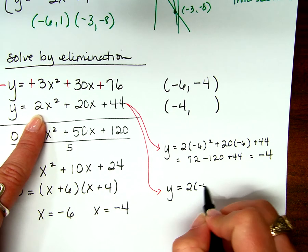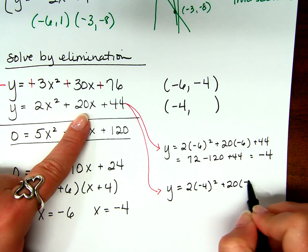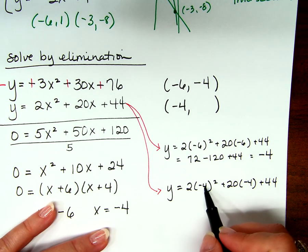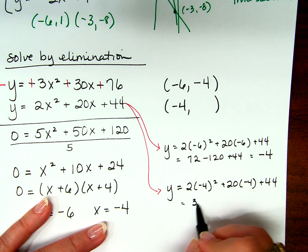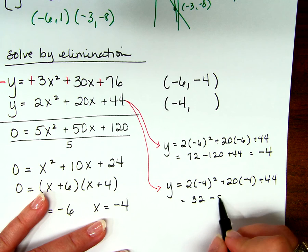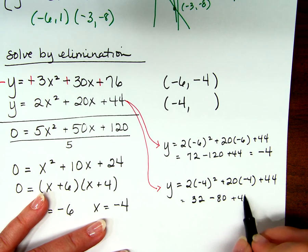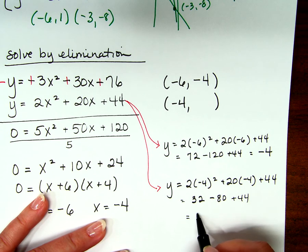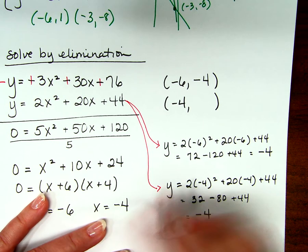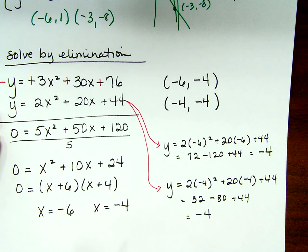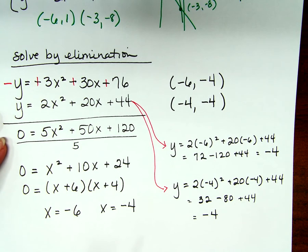Now I've got to do it again with negative 4 as my x value. Y equals 2 times negative 4 squared plus 20 times negative 4 plus 44. Negative 4 squared is 16, times 2 is 32. 20 times negative 4 is negative 80, plus 44. So 32 minus 80 plus 44 gives negative 4. These are my two solutions. Any questions about elimination?